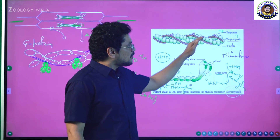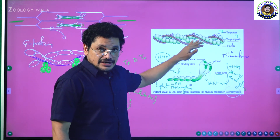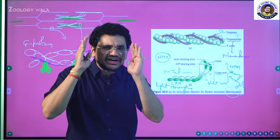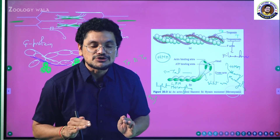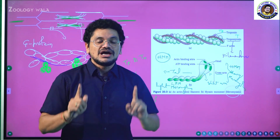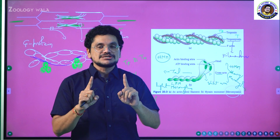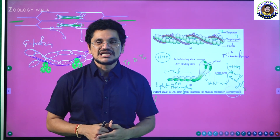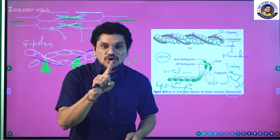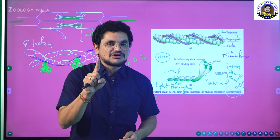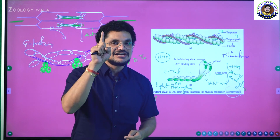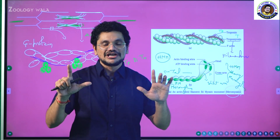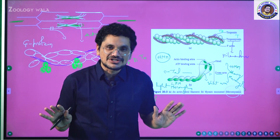Troponin and tropomyosin are going to play a very important role. How they play an important role I am going to explain in the mechanism of muscle contraction in my coming video. Do not miss the mechanism of muscle contraction in the coming video. Thank you, my dear friends. That is all about this session.